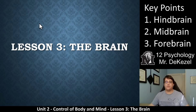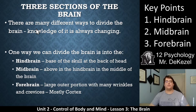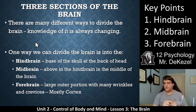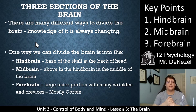The key points are hindbrain, midbrain, and forebrain — those are different sections of the brain. There are many different ways to divide the brain because knowledge of the brain is always changing. You could search sections of the brain and get many different types and areas that overlap, getting very specific to speech, memory, and motor control. We are going to stay away from getting too specific and will stick with just a couple.